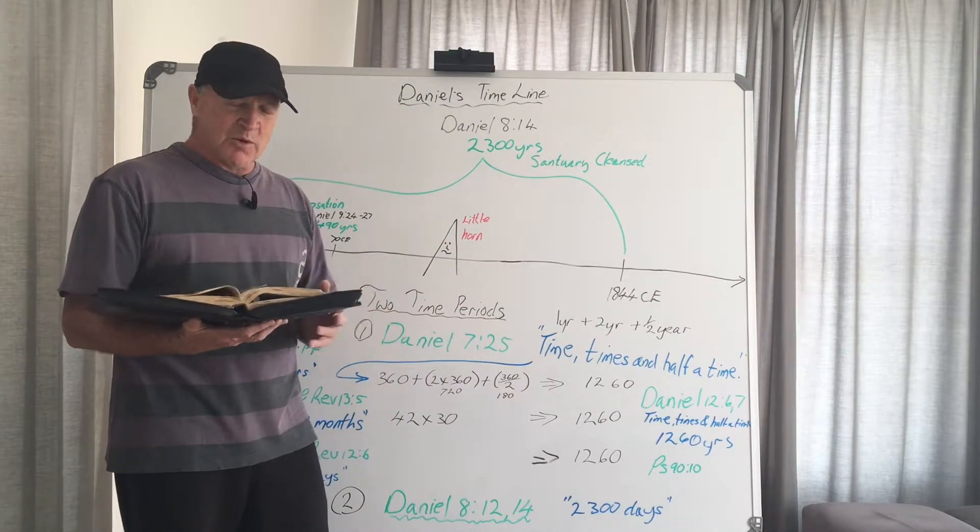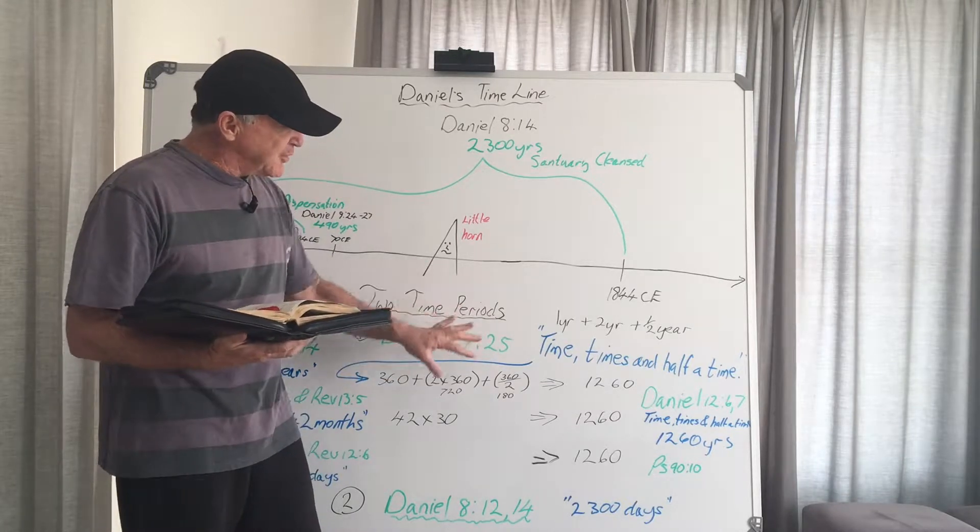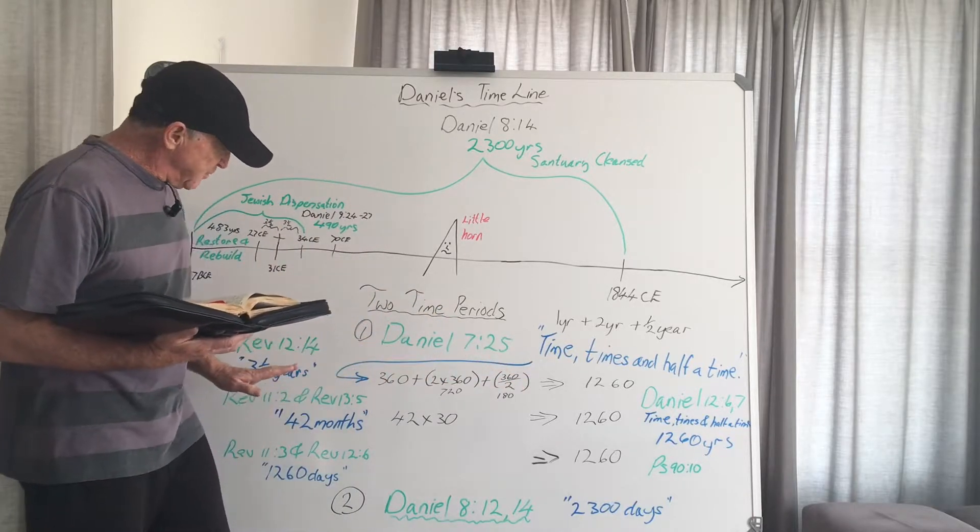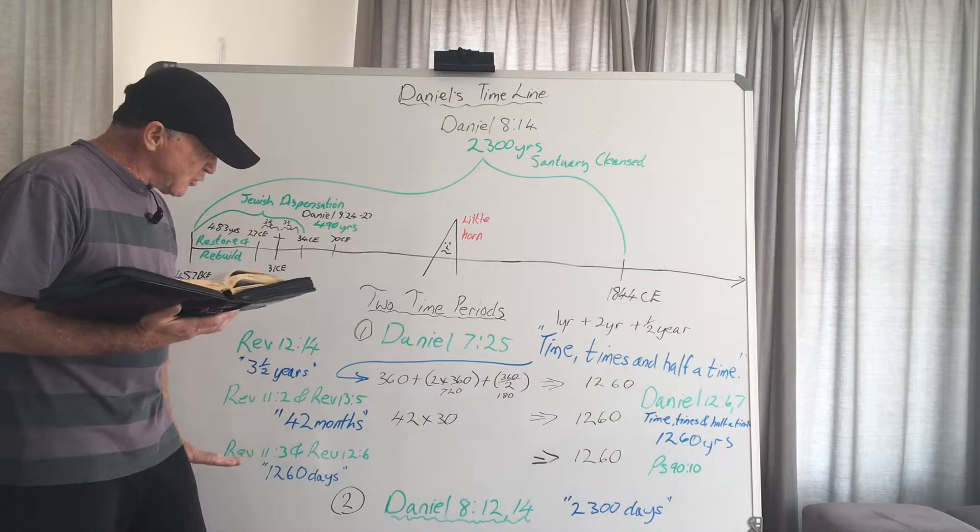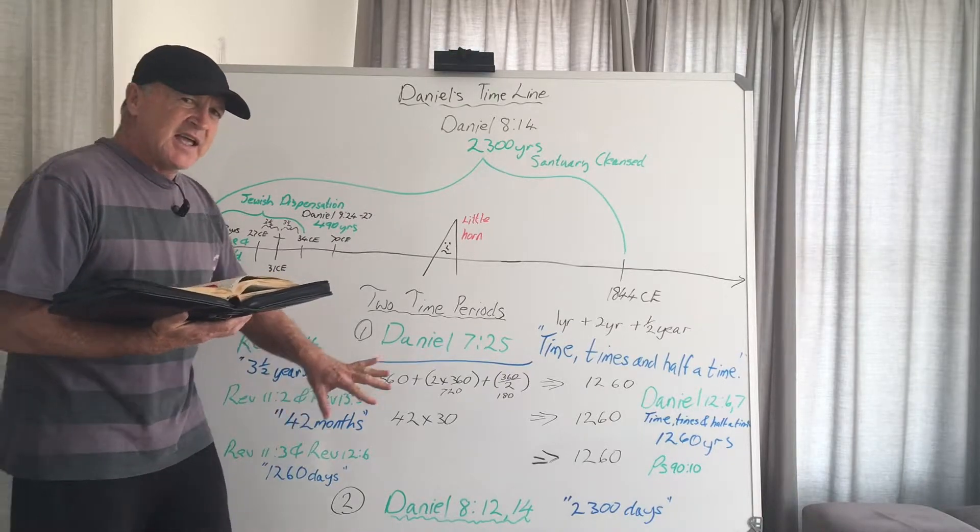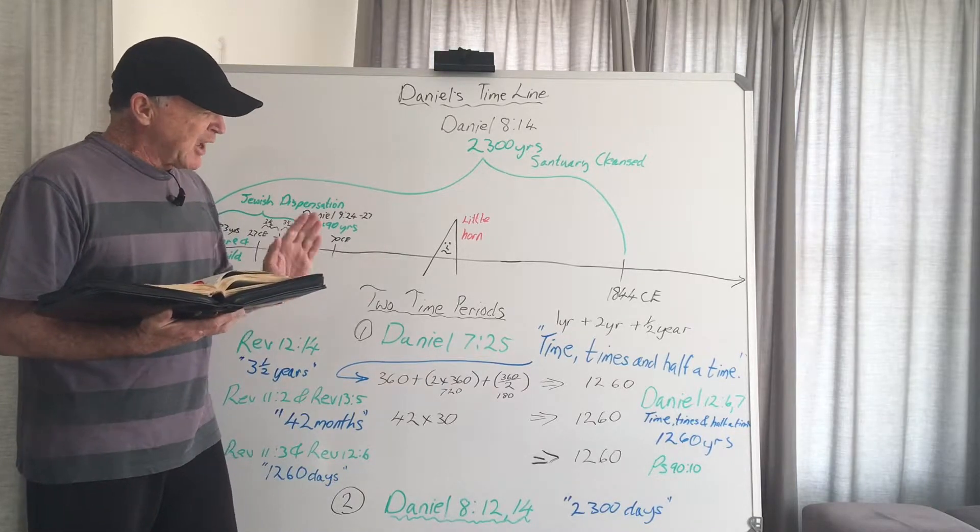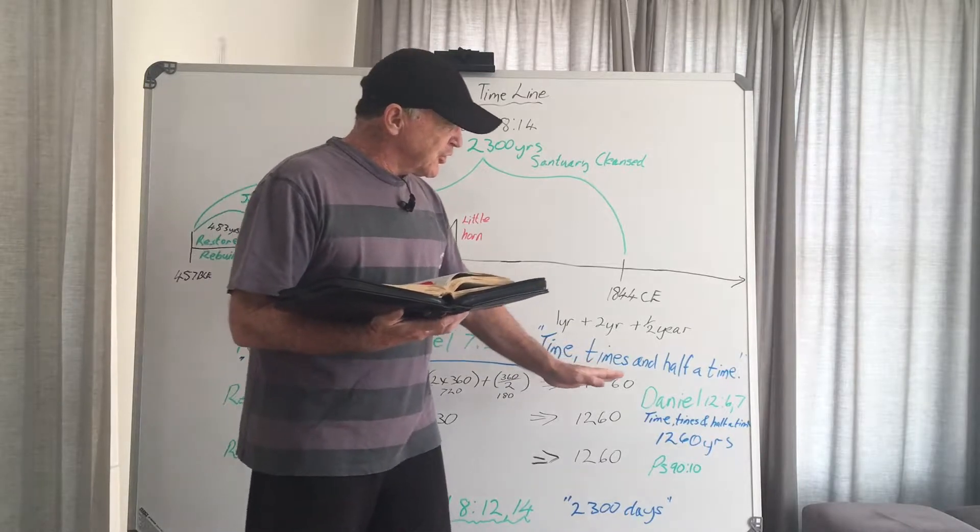And this is important to understand as we look at this little horn and this first period of time. We will notice that in certain periods, for example the three and a half years, the 42 months, and the 1,260 days, it's been doing something. And we are going to look at that again too. But I want you to notice today as we close off this study that I want to draw your attention to Daniel chapter 12.